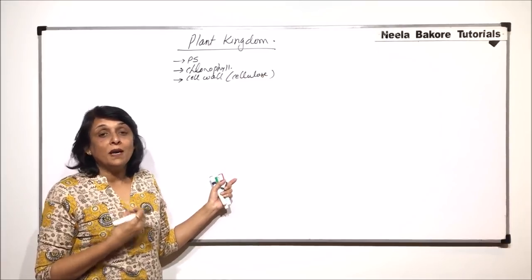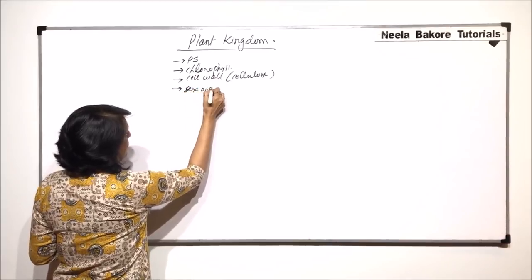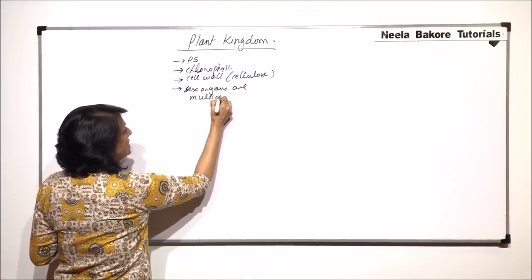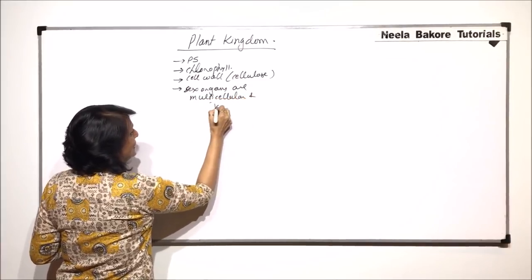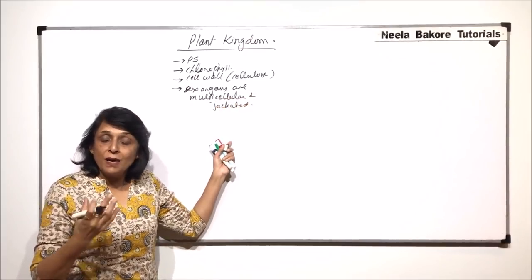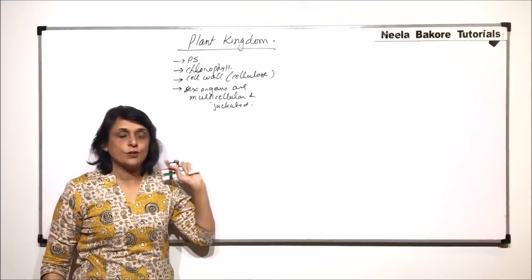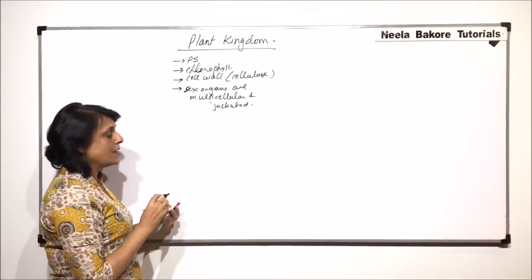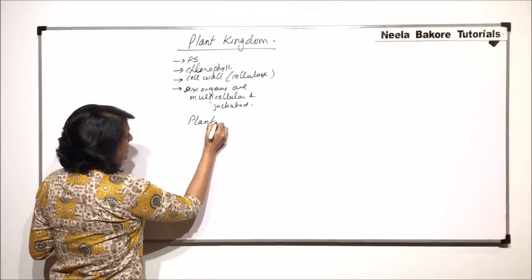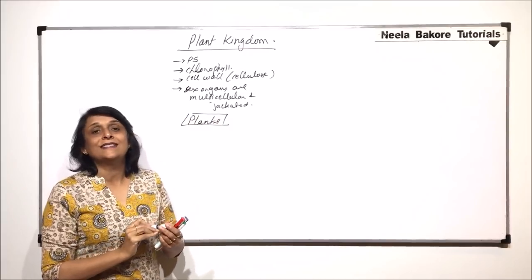The sex organs are going to be multicellular and jacketed — that means they are covered with multiple cells, with few exceptions that we will also discuss. These are some general characters. Now let us talk about some brief classification. The first classification is general, and then the next one will be a little more technical.